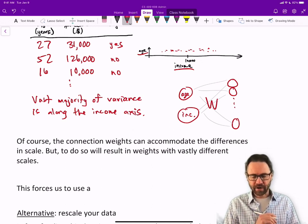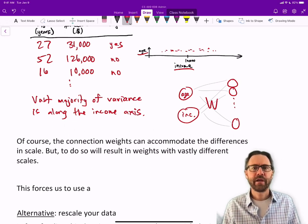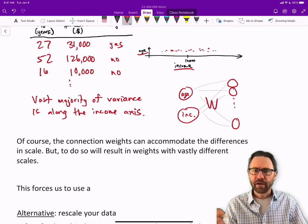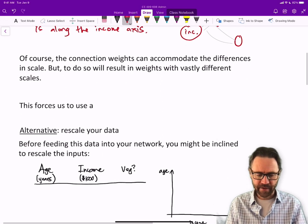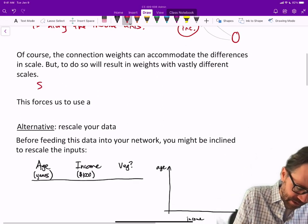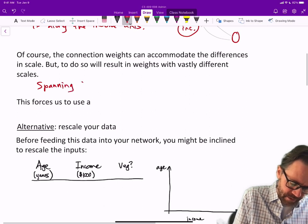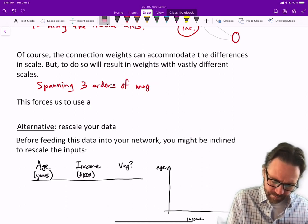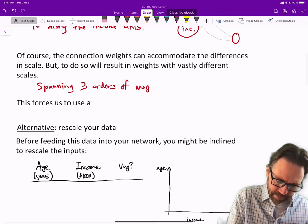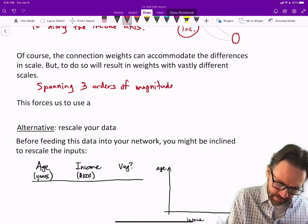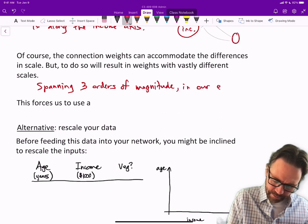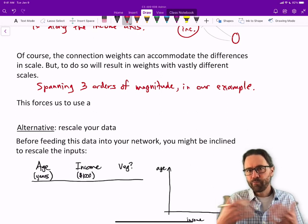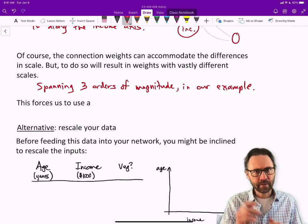The connection weights can accommodate the differences in scale, but to do so will result in weights with vastly differing scales. When you think about gradient descent, that's going to have an impact. These weights are spanning three orders of magnitude in our example.